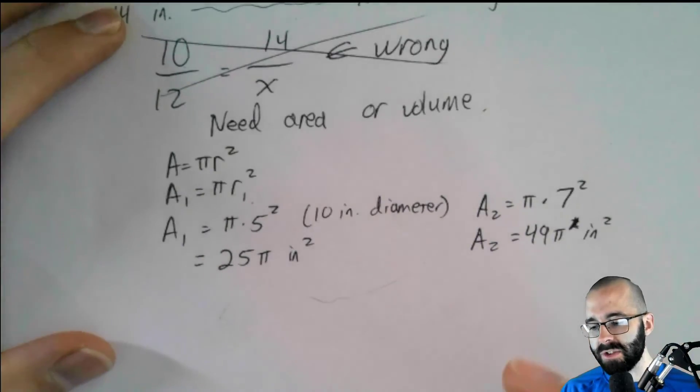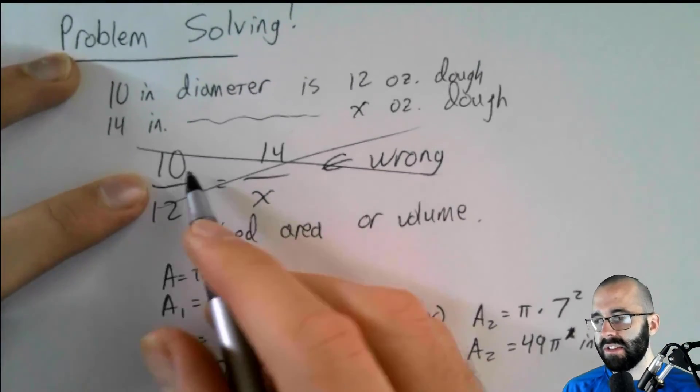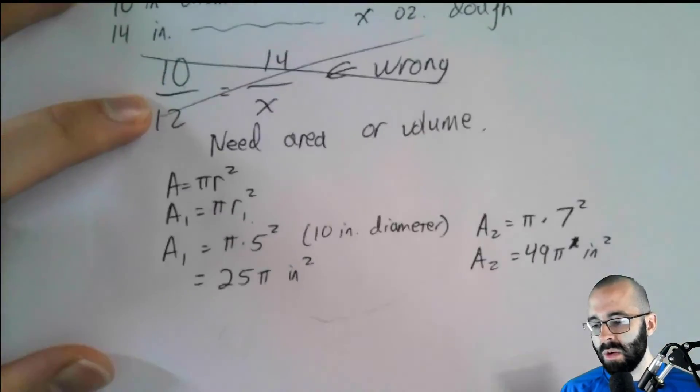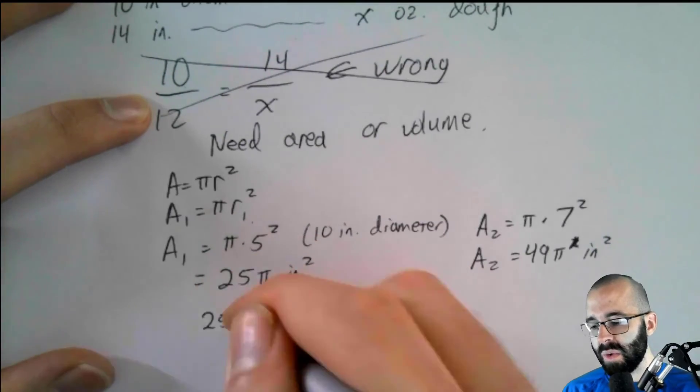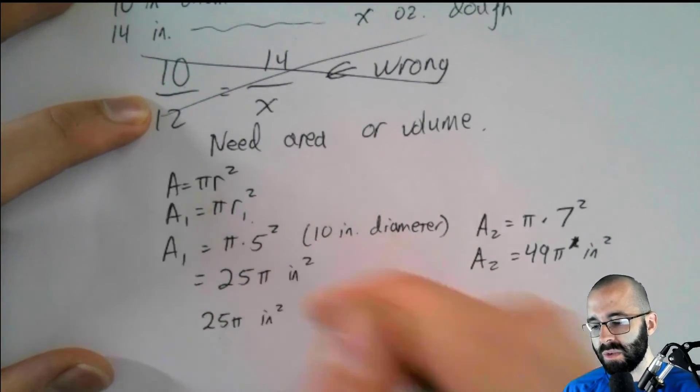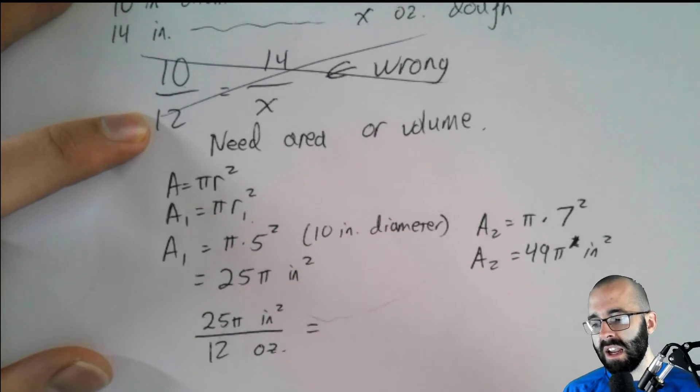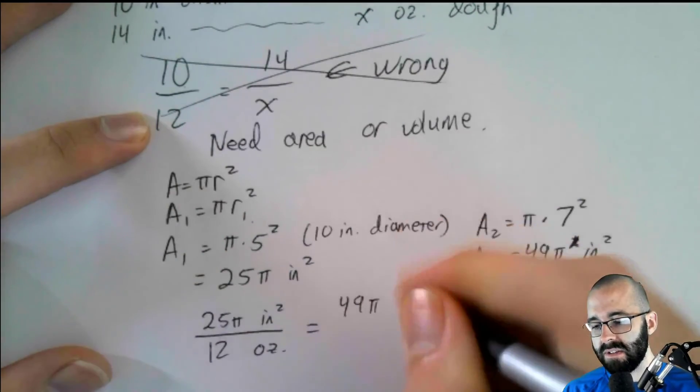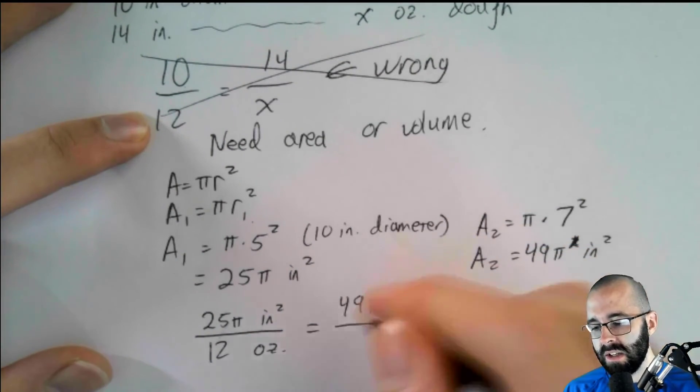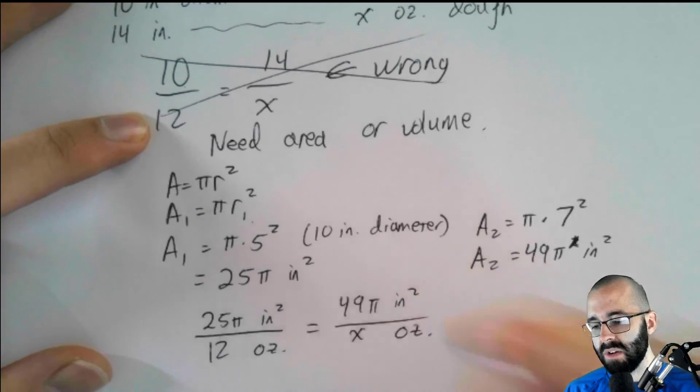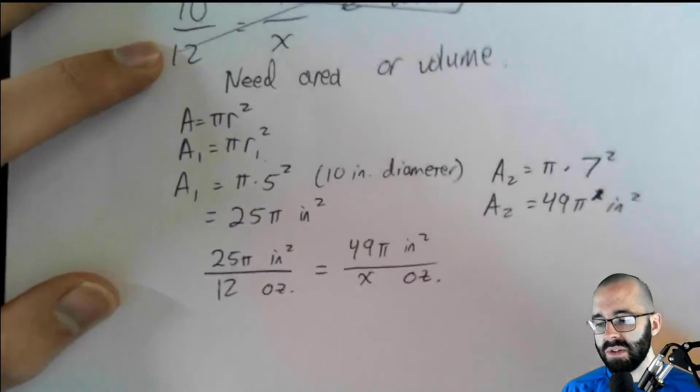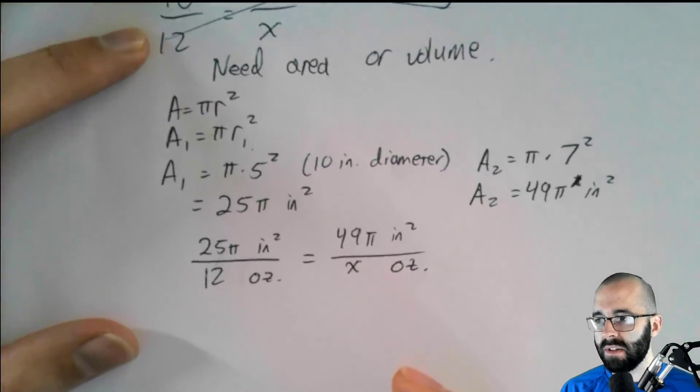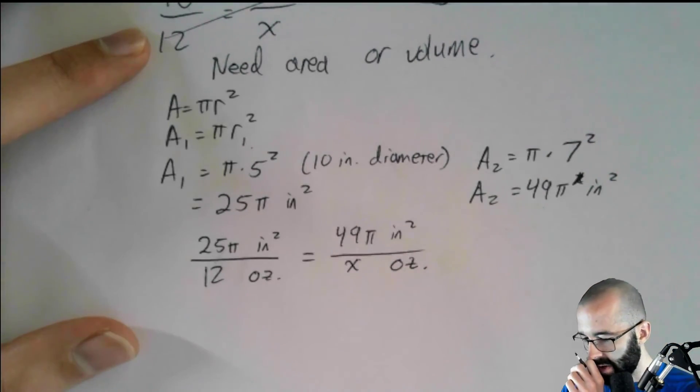And now we can set up a proportion. So instead of 10 inch to 12 ounce, we're going to do, it's about 25 pi inches squared. That is to 12 ounces of dough. So, the same as 49 pi, you don't have to include units here if you don't want to, inches squared, is to x ounces of dough. And we'll cross multiply, the units will cancel out. We have the same units everywhere.